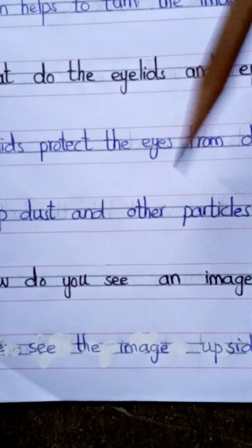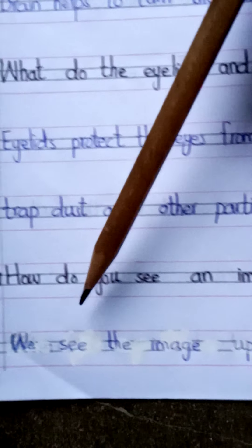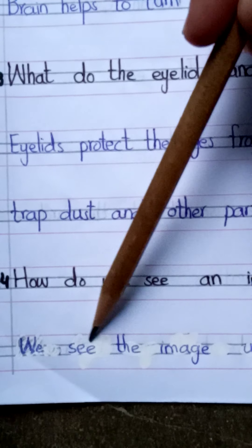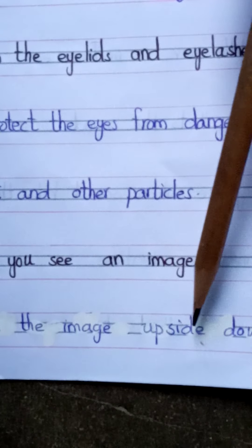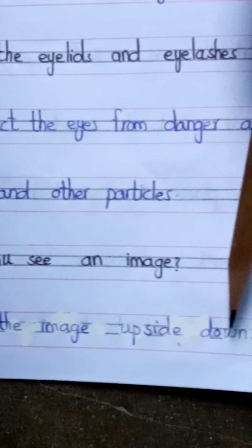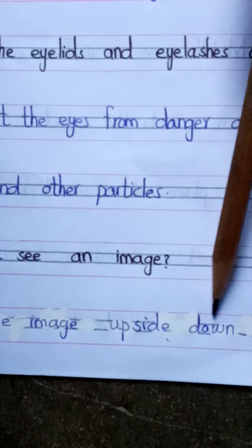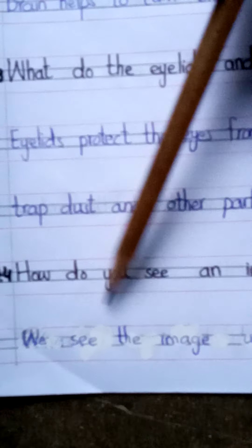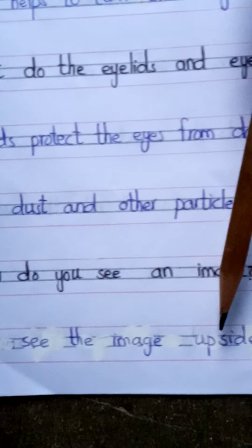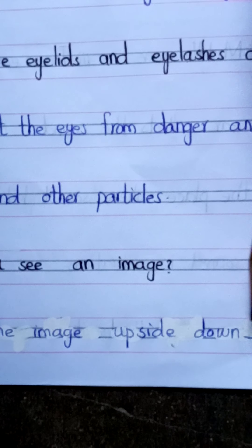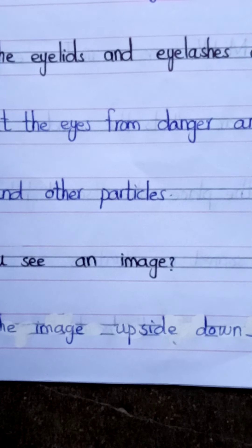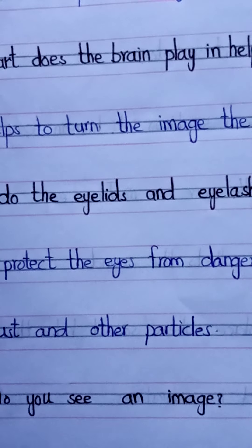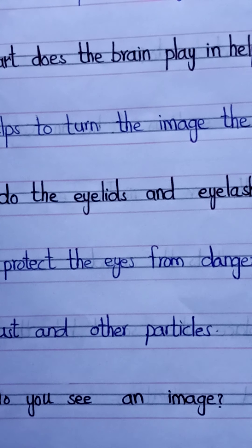Question number four: How do you see an image? We can see the image upside down initially on the retina.